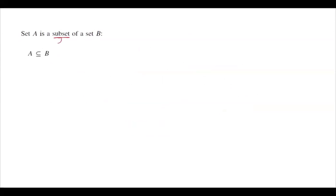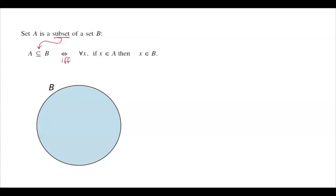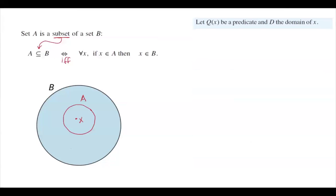Suppose you have two sets A and B. We say that A is a subset of B, denoted A ⊆ B, if and only if for every element x in set A, you can conclude that x belongs to B — that element lands in B. So if this is set B, set A is a subset of set B; it lands inside B. If you take any random element in A, that element lands in B.